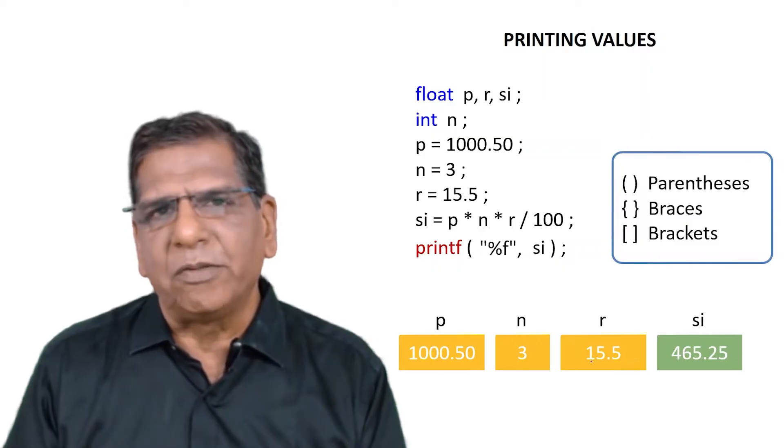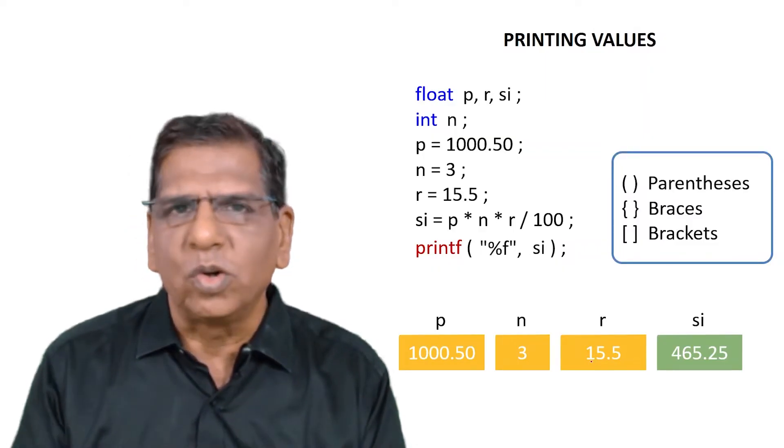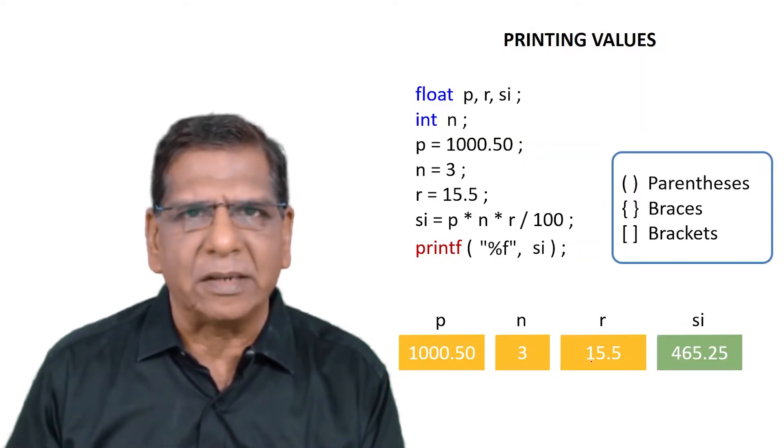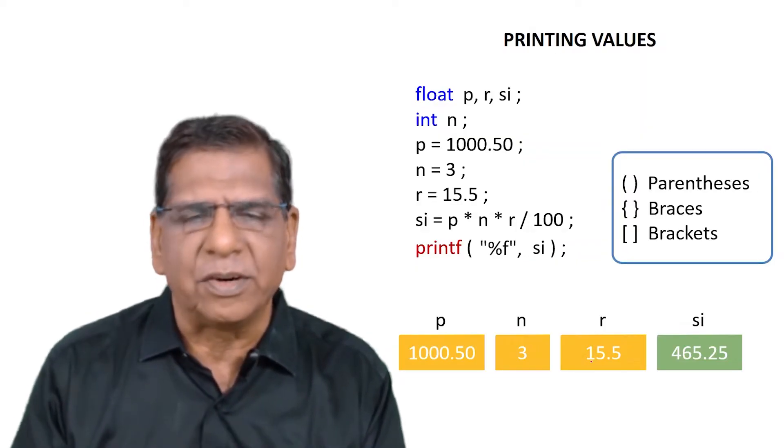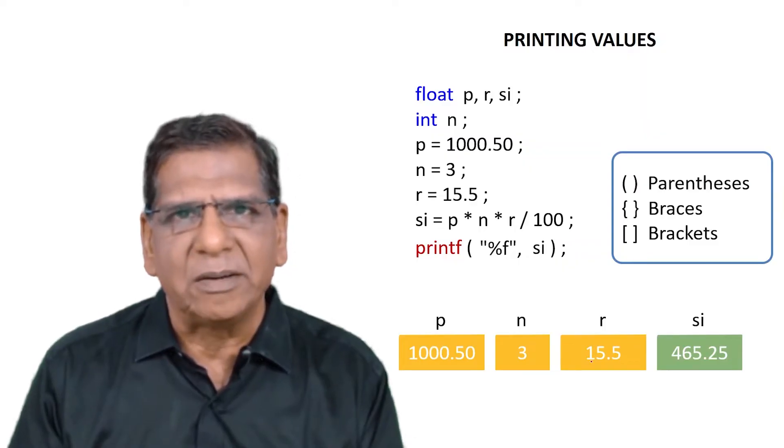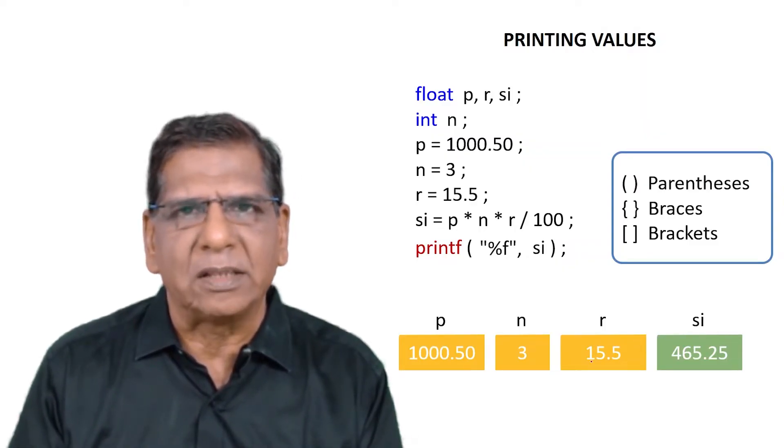Notice that with printf what we have used is a pair of parenthesis. Don't call them as rounded brackets, that's a wrong terminology. Always use this terminology: parenthesis, braces, and brackets. They are distinct, they are different. In C programming all three are allowed, but each is used with a different purpose in mind. So with printf we should always employ a pair of parenthesis.